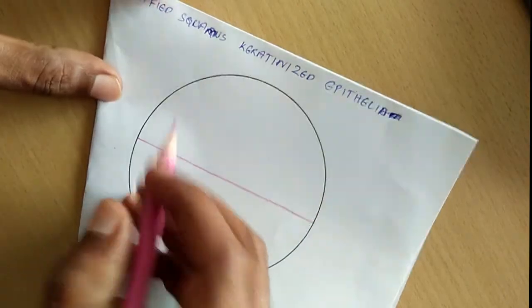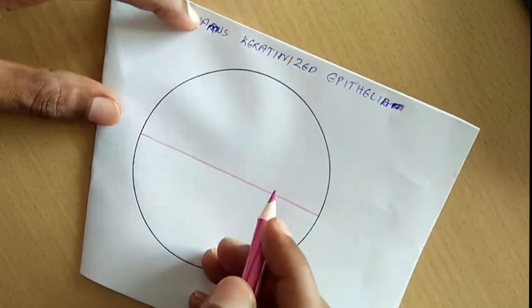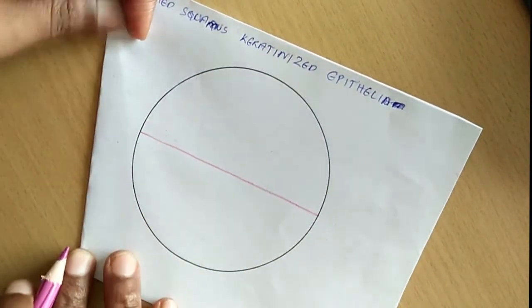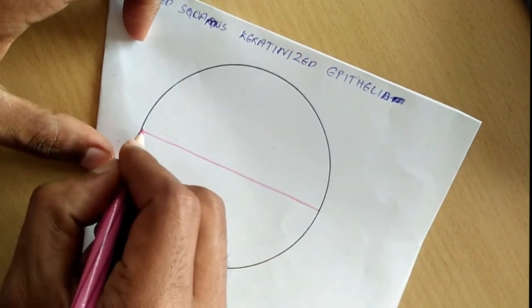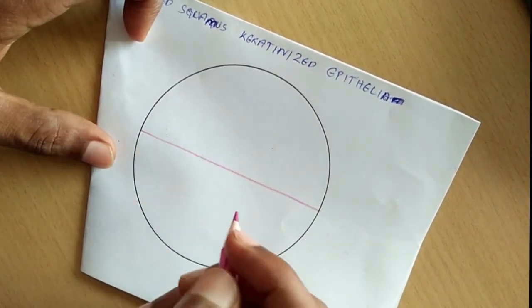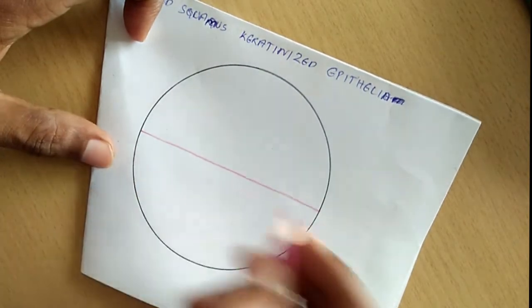This epithelium is stratified, that means it has many layers. So let's draw different layers here. The first layer is columnar epithelium. So let me draw the first layer.